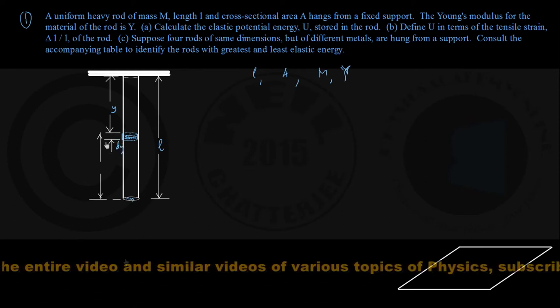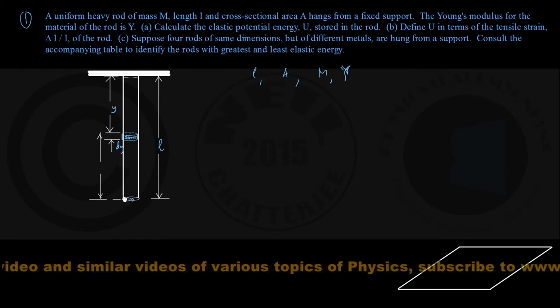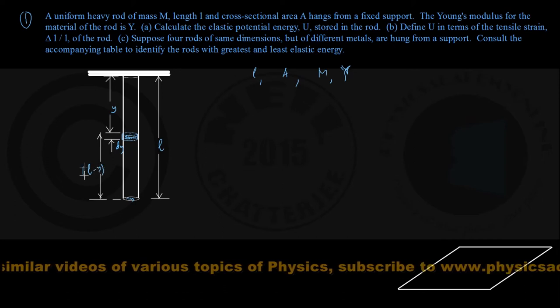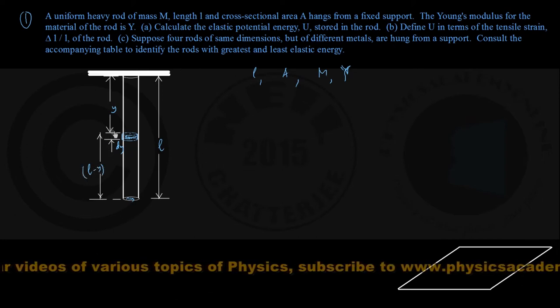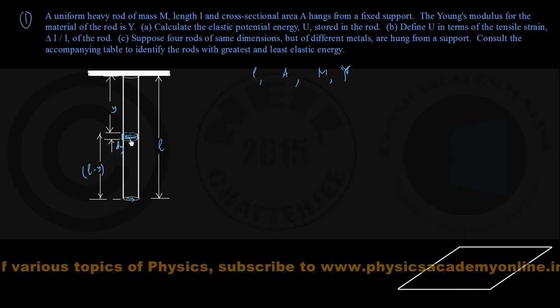It is obvious that the lower portion, starting from here up to this, is coming out to be L minus Y. You understand Y is a variable quantity depending on the location of this infinitesimal element under investigation.